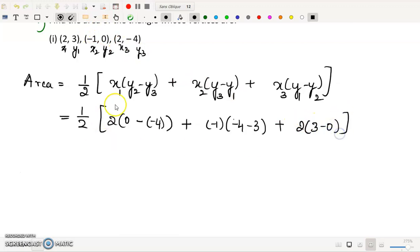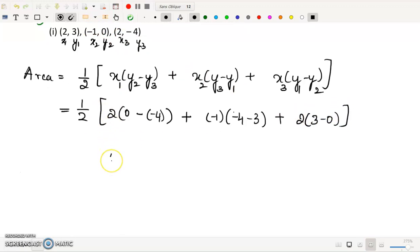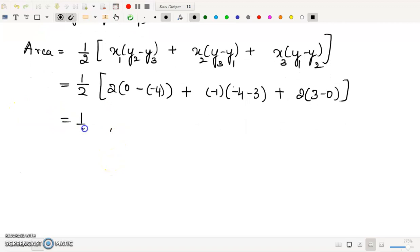Plus x3 is 2. y1 is 3, minus 0. So it is 1 by 2, 2 into 0. Minus of minus is plus. So 0, this is 0 plus 4. So 0 plus 4 equals 4.